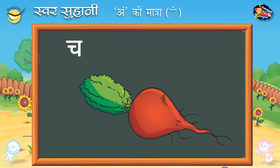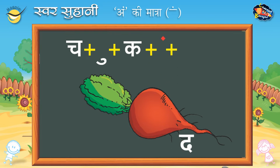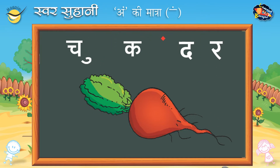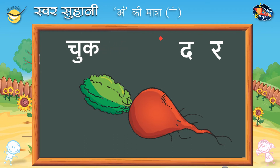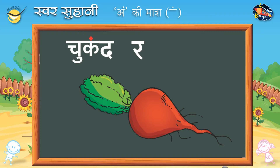च — छोटे उक की मात्रा। क — द — र — चुकंदर।